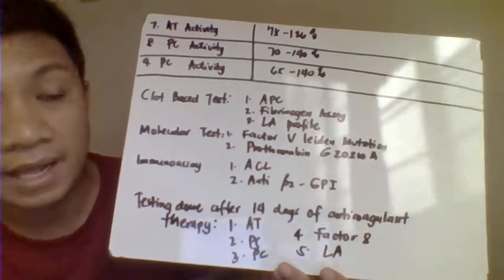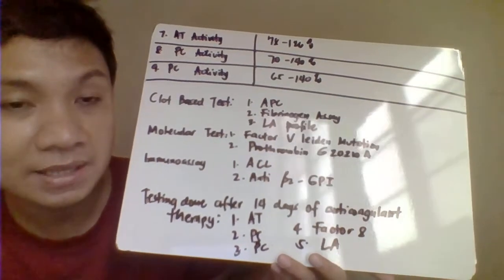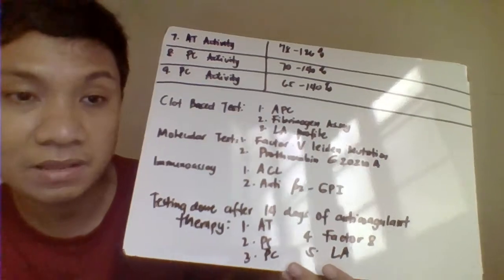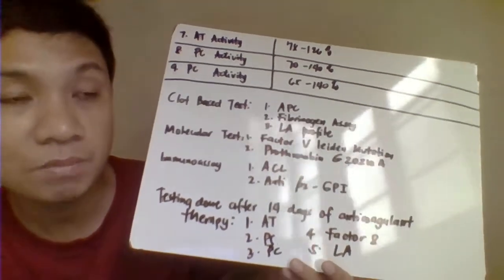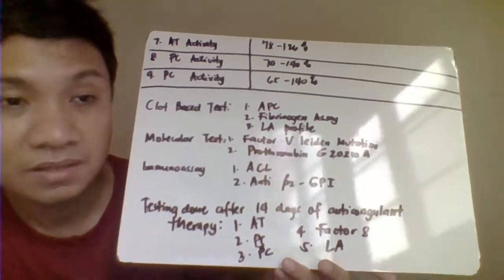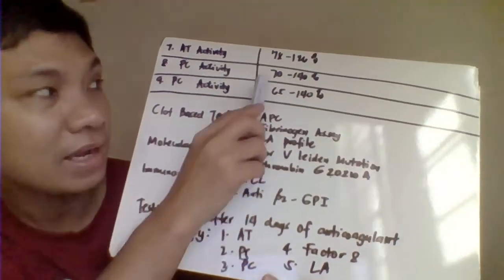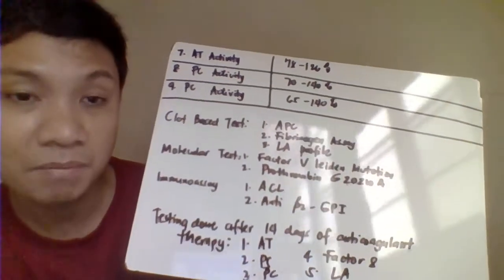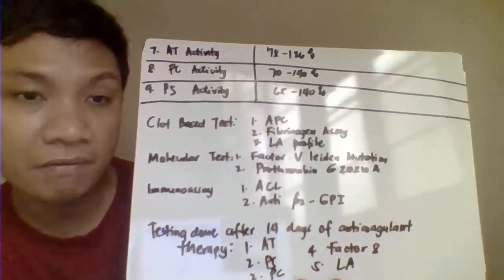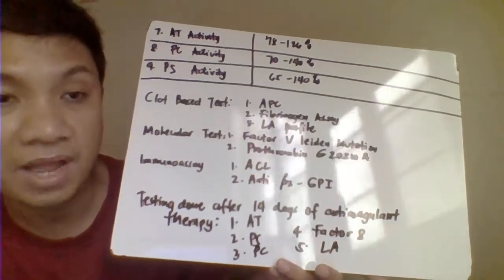Antithrombin activity normal range is 78–126%. If the result is less than 78%, this diagnoses thrombosis. Protein C (PC) activity normal range is 70–140% — less than 70% results in thrombosis. Protein S (PS) activity normal range is 65–140% — less than 65% signifies thrombosis. These proteins help digest clotting factors; without them, clot formation occurs.